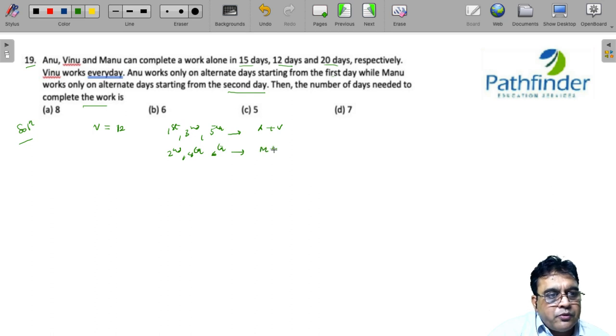So we need to find out the number of days needed to complete the work when they are working alternately. So how do we go about it? The first thing we do is: